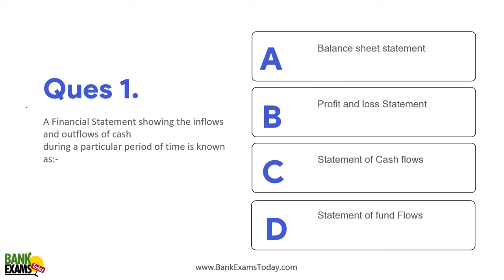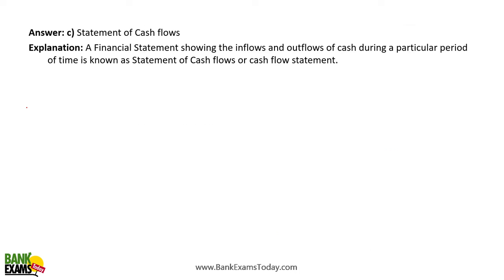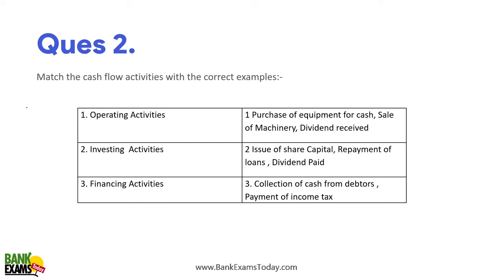Now we'll do some exam-related questions — questions from previous years — so you will understand the concept in a better way. A financial statement showing inflow and outflow of cash during a particular period is known as the statement of cash flows. You need to match activities: operating, investing, or financing. Collection of cash from debtors and payment of income tax are operating activities. Repayment of loan and dividend repayment are financing activities. Purchase of equipment for cash and sale of machinery are investing activities.